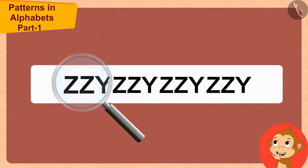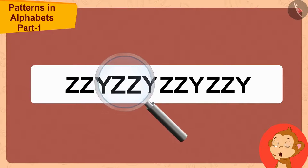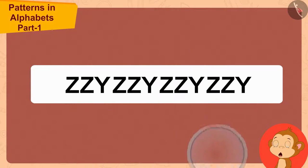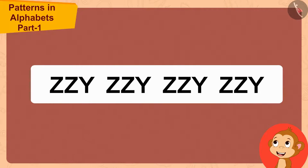Z, Z, Y, Z, Z, Y, Z, Z, Y. Good. Here, Z, Z, Y is repeating in these three-letter groups over and over again.